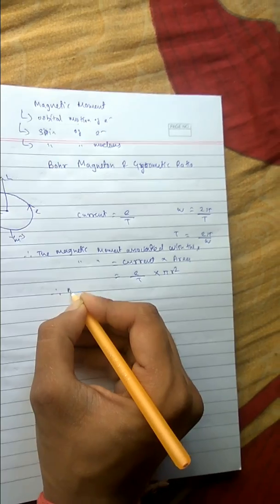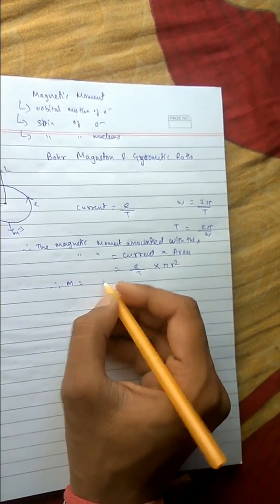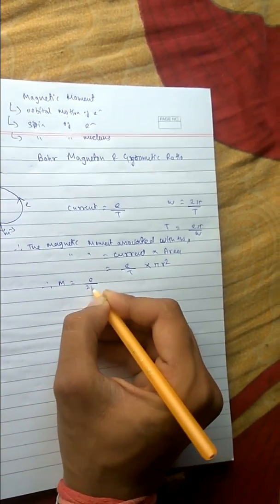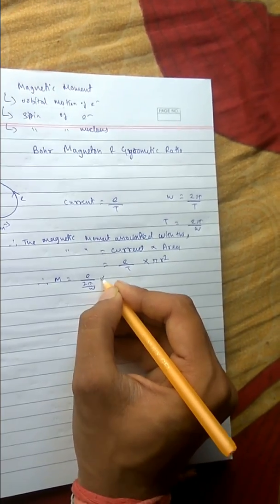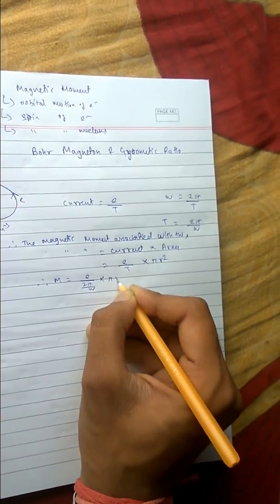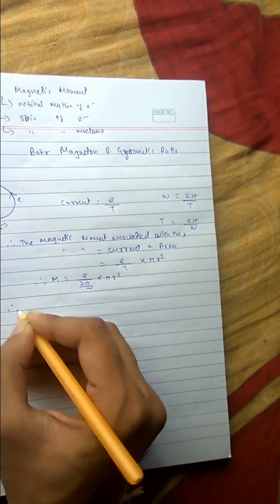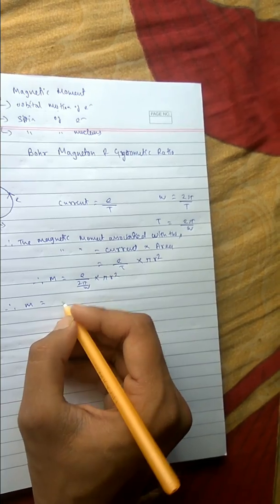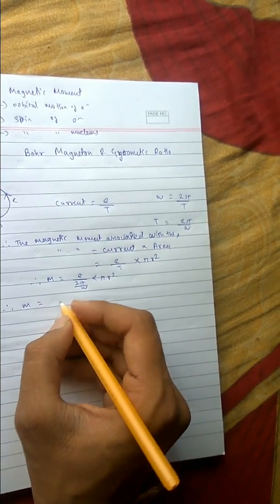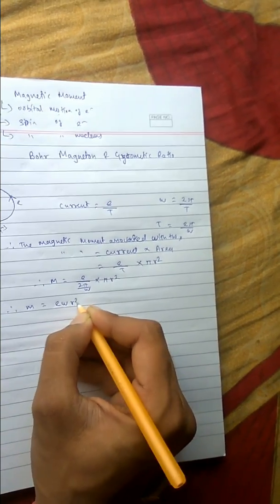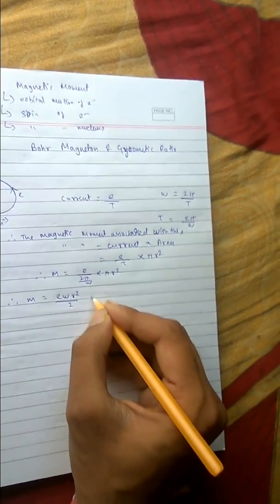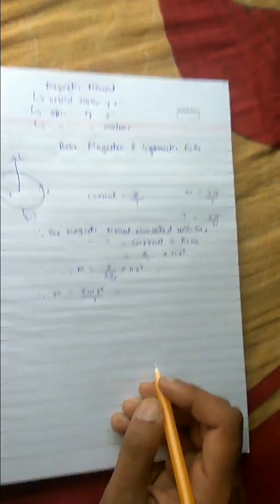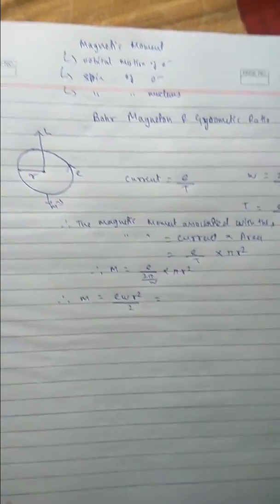Since t can be written as 2π over omega, substituting gives: m equals (e divided by 2π/omega) times π r squared. Therefore, m equals e·omega·r² divided by 2.